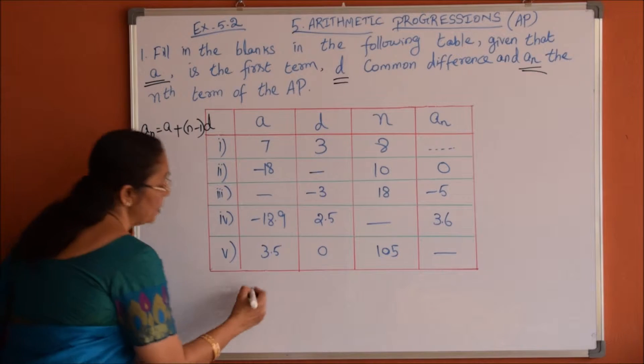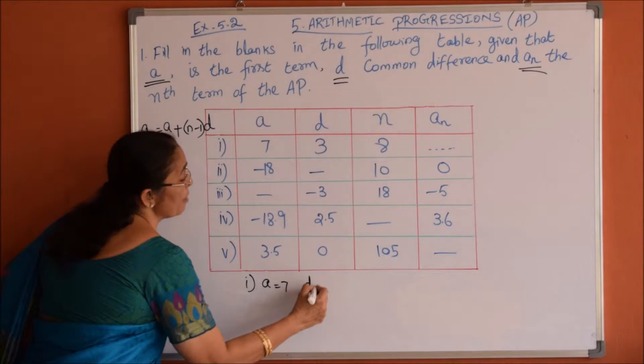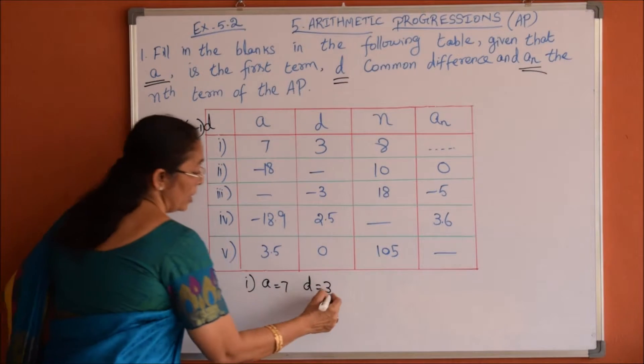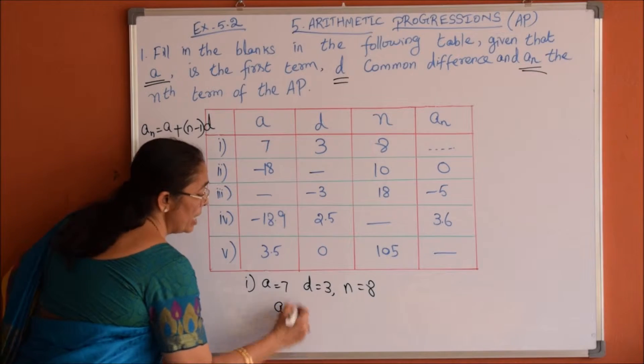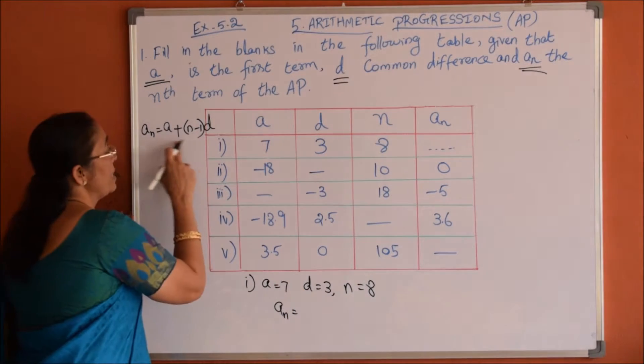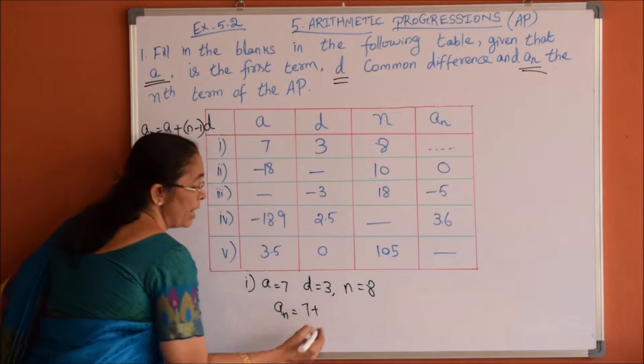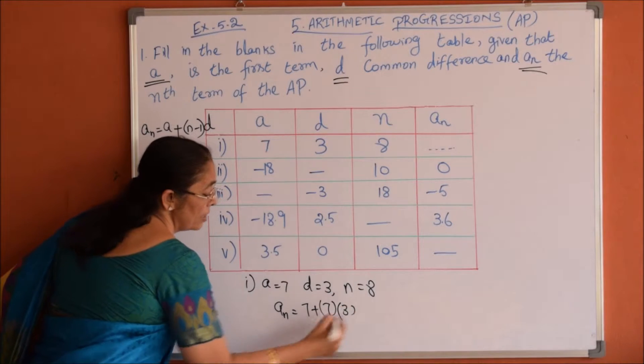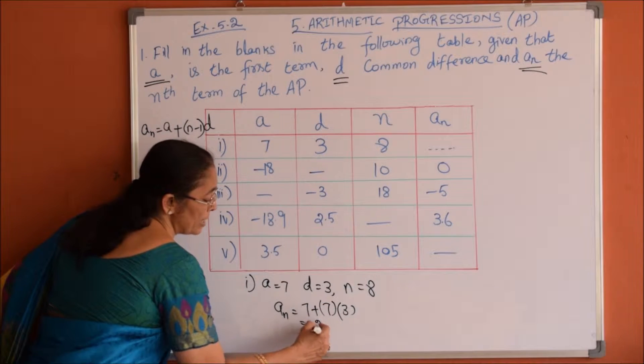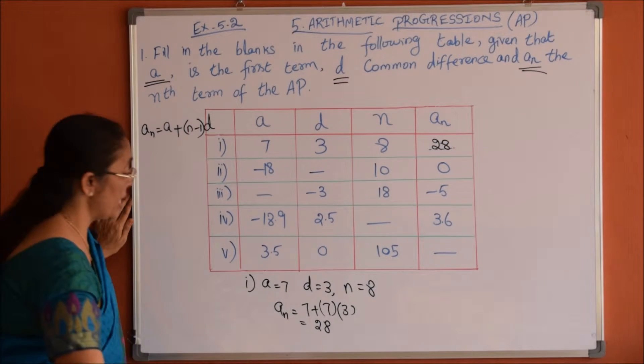For the first problem, a is given as 7, common difference is 3, and n value is 8. An will be a plus (n minus 1) times d, which is 7 plus (8 minus 1) times 3, equals 7 plus 21, equals 28. So for the first one, An is 28.